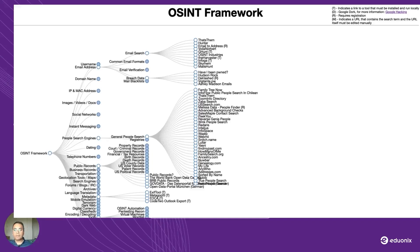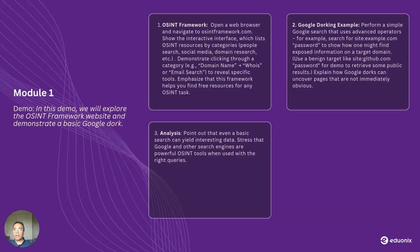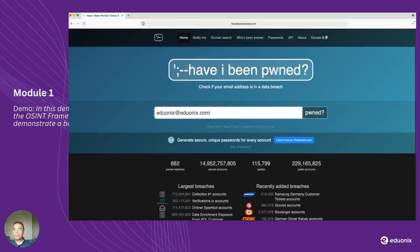If you click on email addresses, it further opens email searches, common email format, email verification, breach data, and mail blacklist. If I click on breach data, I can go to Have I Been Pwned. Have I Been Pwned is a really useful website that can tell you if your email address has been part of a data breach or a hack.